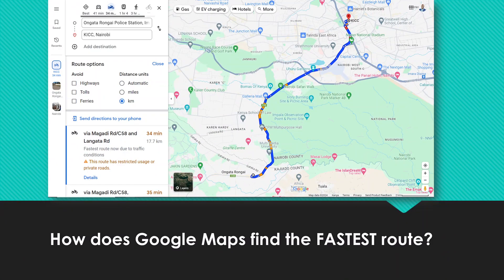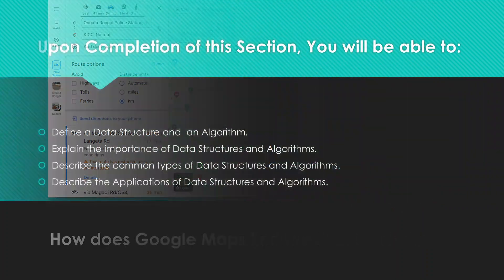You've ever used Google Maps, and when you search for a particular destination you give it the input which is your current destination, then it will be able to look at the best path that will guide you all the way to your destination. So by the end of this topic we should be able to understand how Google achieves this using data structures and algorithms.